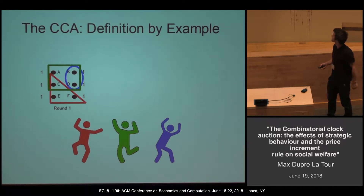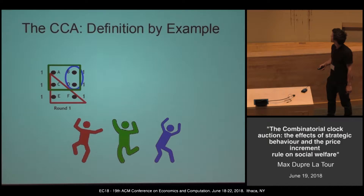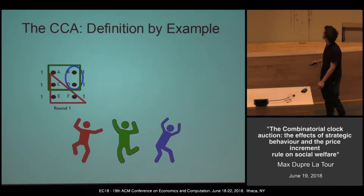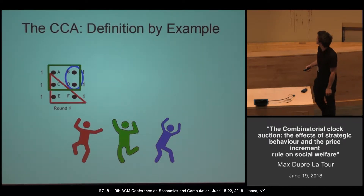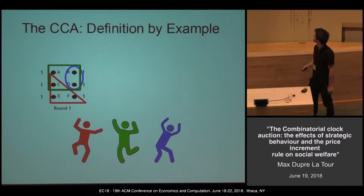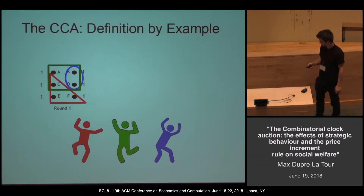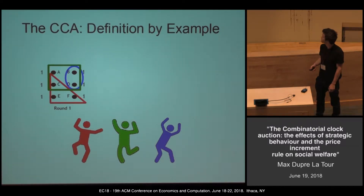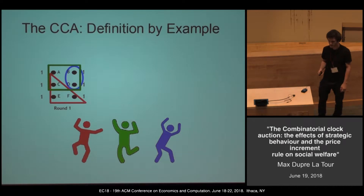We have a starting price on each item. And if an item belongs to more than one bid, we have excess demand on that item and the price is incremented. Here we have excess demand on B, C, and D.